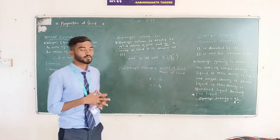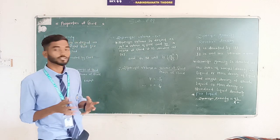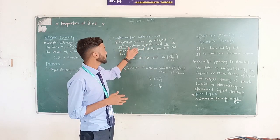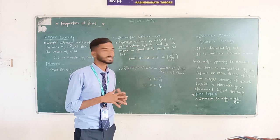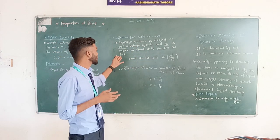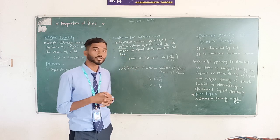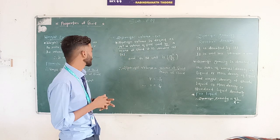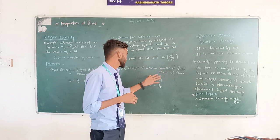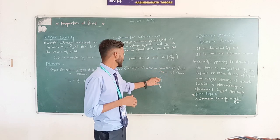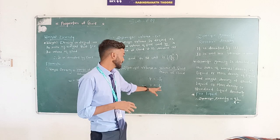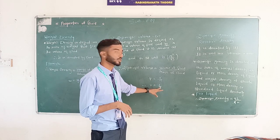Now we will learn about specific volume. Specific volume is defined as meter cube per kilogram — that is, the volume of fluid per the mass of fluid. The formula is V equals volume of fluid upon mass of fluid, which can also be written as 1 upon rho.